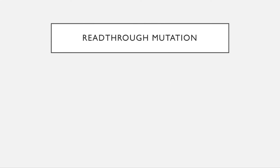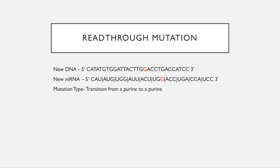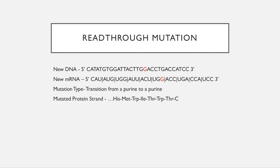A read-through causes there to no longer be a stop codon where there's supposed to be, and this causes issues now that the protein is a lot longer, so it may fold differently and may have different properties that it didn't have before. The mutation type is a transition because you're going from a purine to a purine, so you're going from an A to a G. This causes the sequence to be histidine, methionine, tryptophan, isoleucine, threonine, tryptophan, threonine — and this causes an issue where the protein strand is now too long.